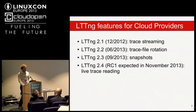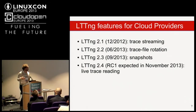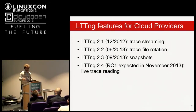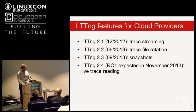In September we introduced snapshots in LTTng 2.3. Snapshots are combined with what we call the flight recorder — a tracer that only works in memory, recording events in memory and never writing to disk. When you want, you simply ask to create a snapshot and it dumps the trace to disk. We'll see an example of this shortly.